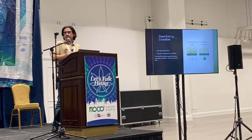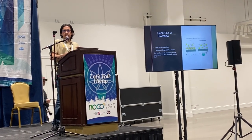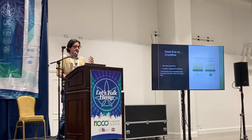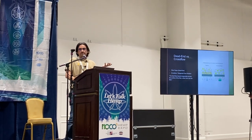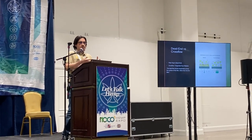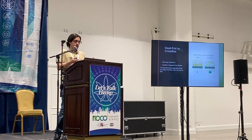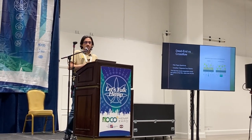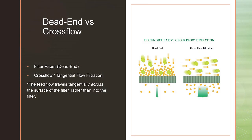There are two main types of filtration processes: dead-end or cross-flow filtration. Dead-end is like filter paper, where particles are retained on the surface of the filter medium. In cross-flow or tangential filtration, the main difference is that there is no accumulation of particles — you have one inlet and two outlets, versus dead-end filtration which typically has an inlet and an outlet.